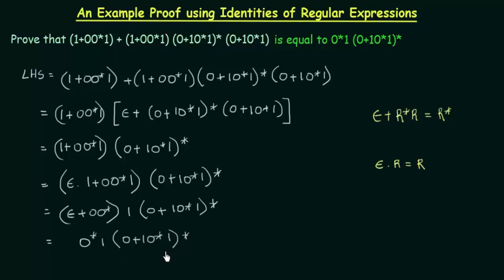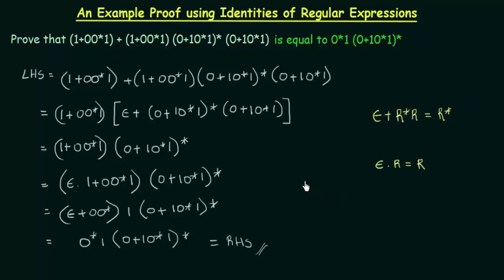If you check this with the RHS, it is exactly the same: 0*·1·(0 + 1·0*·1)* whole star. So this equals our RHS, and that is how we prove these expressions. This is how you use the identities in order to solve these kinds of questions. I hope this was clear. Thank you for watching and see you in the next one.